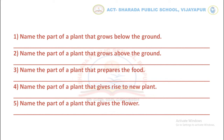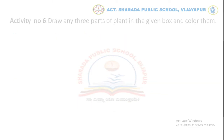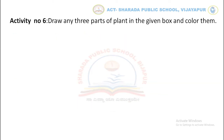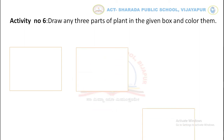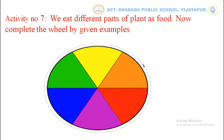Now let's move to activity number six. Draw any three parts of a plant in the given boxes and color them. Now move to activity number seven. Identify the parts of a plant which we eat as food.